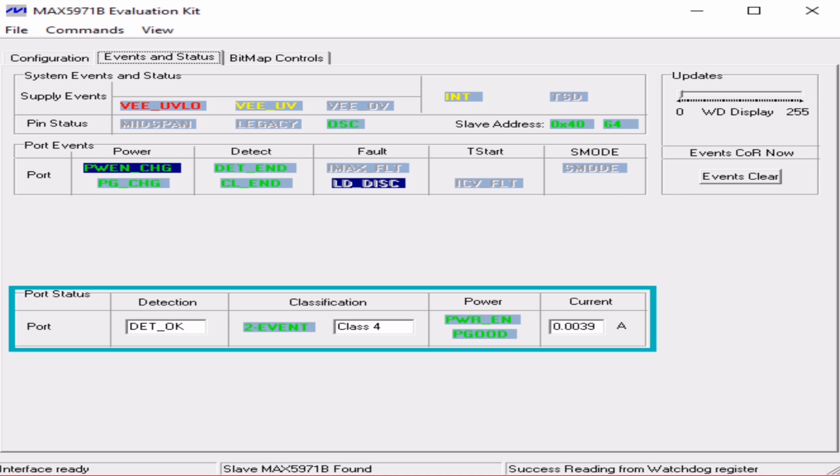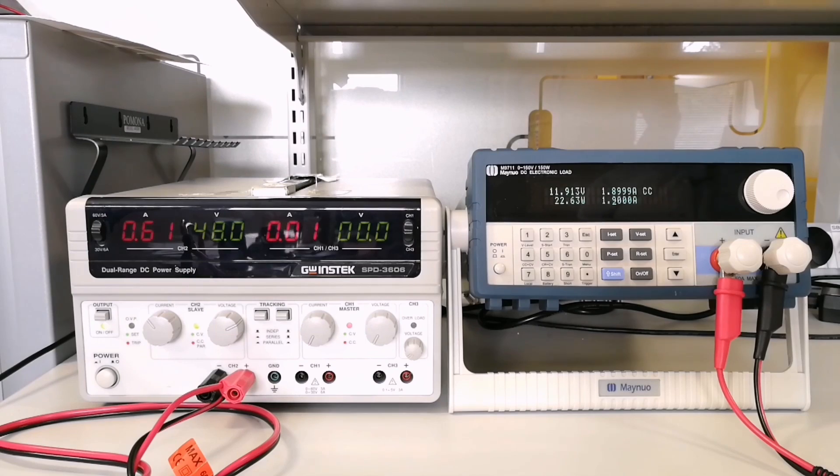From the MAX 5971B evaluation kit software, we can see that our signature detection, classification, and power have all completed successfully. The MAX 5971B has identified the MAX 5969B as a class 4 configuration. As we can see here, our output is 12 volts, 1.9 amps, meaning our setup was successful.